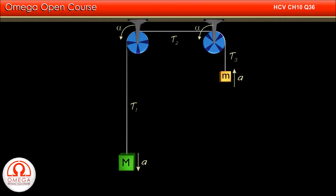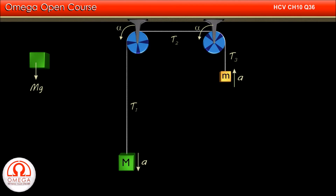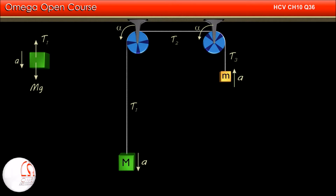Let us draw the free body diagram of the block on the left. The gravitational force of Mg acts on it in the vertically downward direction. Tension T1 pulls the block upward and the block is moving downward with acceleration a. From this FBD, we get Mg minus T1 is equal to M into a.